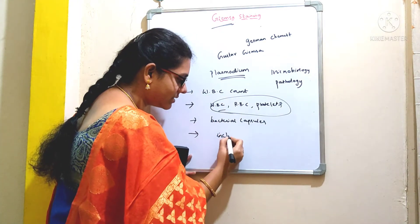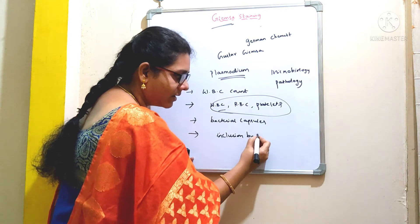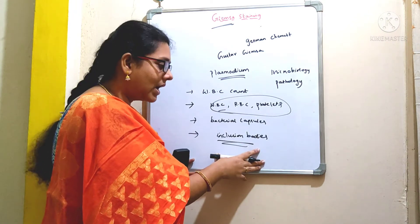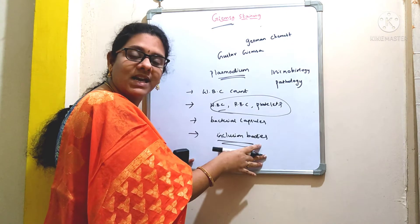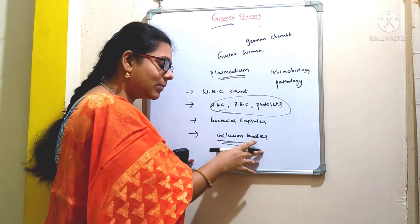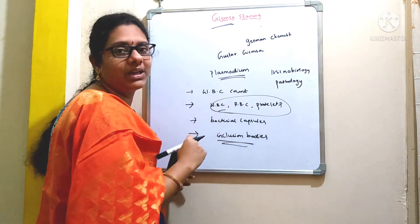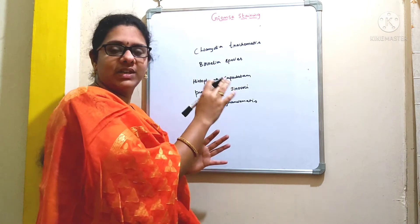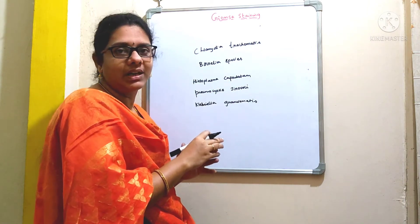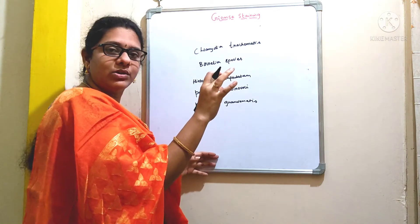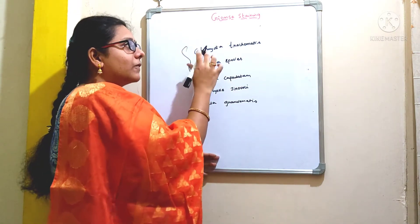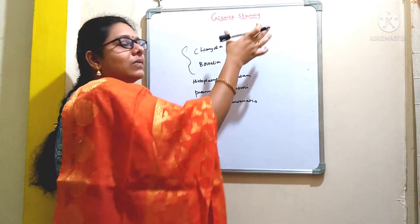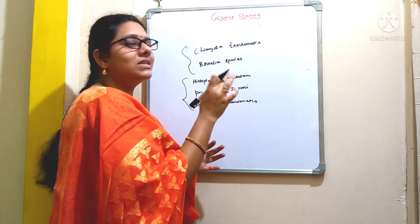With the help of this Giemsa staining technique, it is possible to stain inclusion bodies. These inclusion bodies are generally present within the cytoplasm of bacteria and serve as reserve materials. Those inclusion bodies which are present in the strains of Chlamydia trachomatis and in the Borrelia species can be easily determined with the help of this technique.